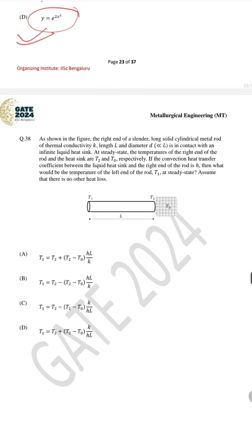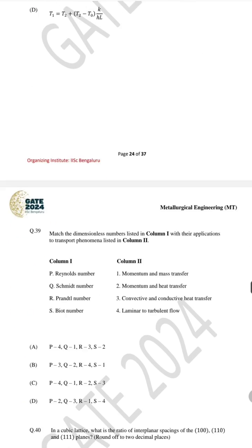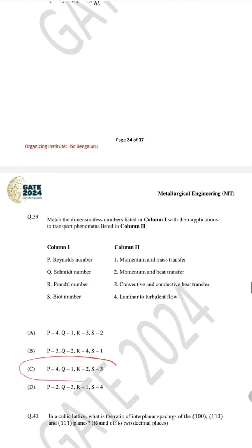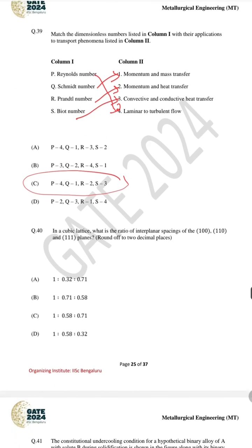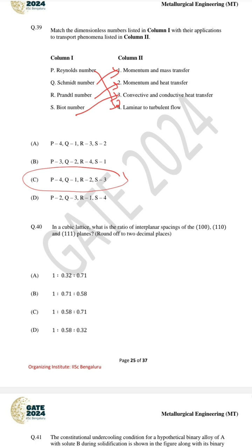For question number 38, the thermal conductivity problem already discussed in the last video, the correct answer is A. For question number 39 the correct answer is C. The Reynolds number is for laminar to turbulent flow, related to momentum and mass transfer; the Prandtl number is for momentum and heat transfer; and the Biot number is for convective and conductive heat transfer. For question number 40 the correct answer involves Re^1 · Pr^0.71 · (something)^0.8, with the full solution discussed in the last video.